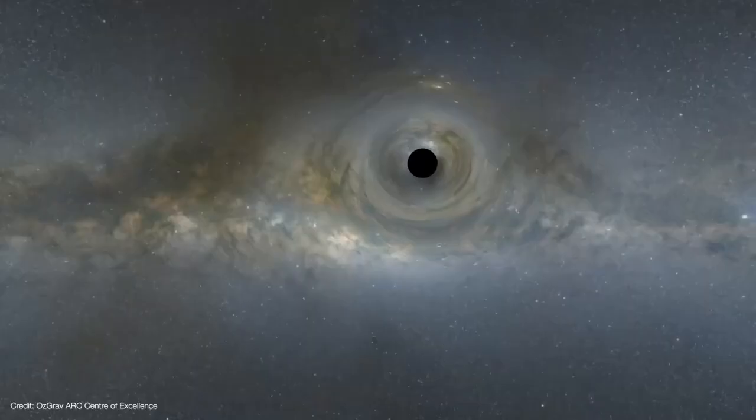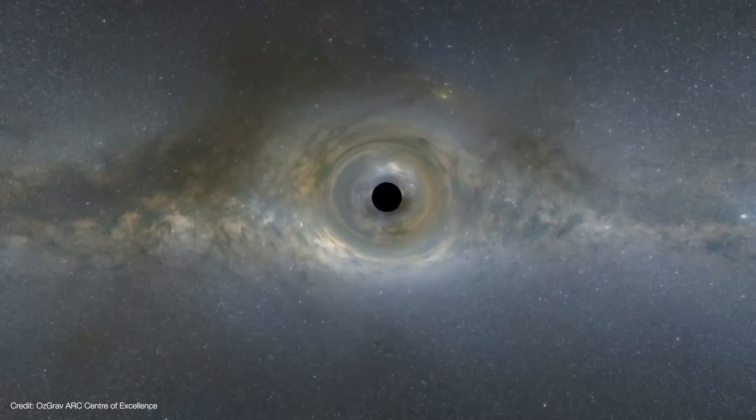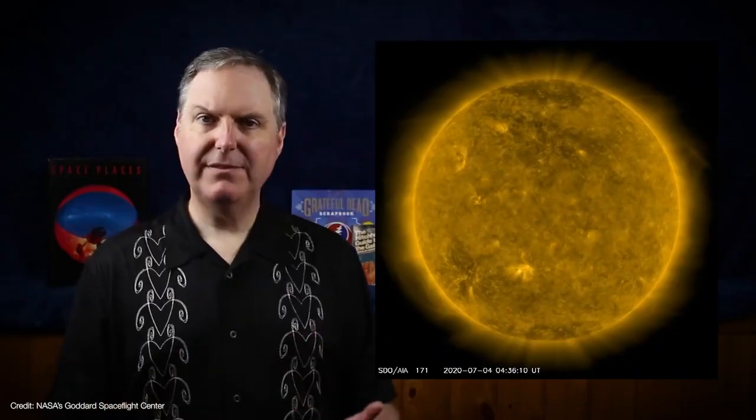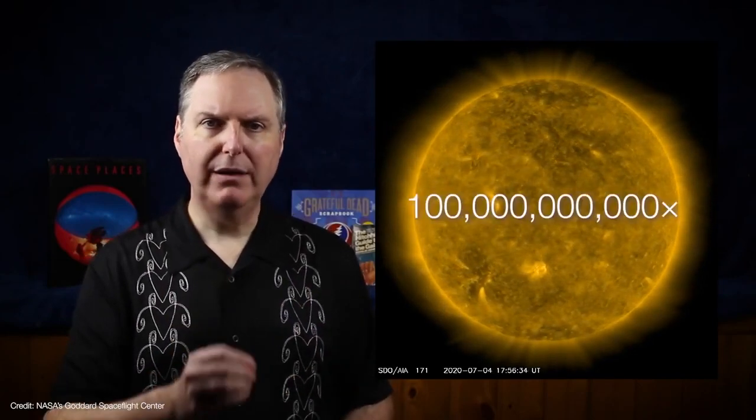As gravitational lenses go, the sun isn't as handy as, say, a black hole. But it is massive enough to amplify a background source by a factor of 100 billion.